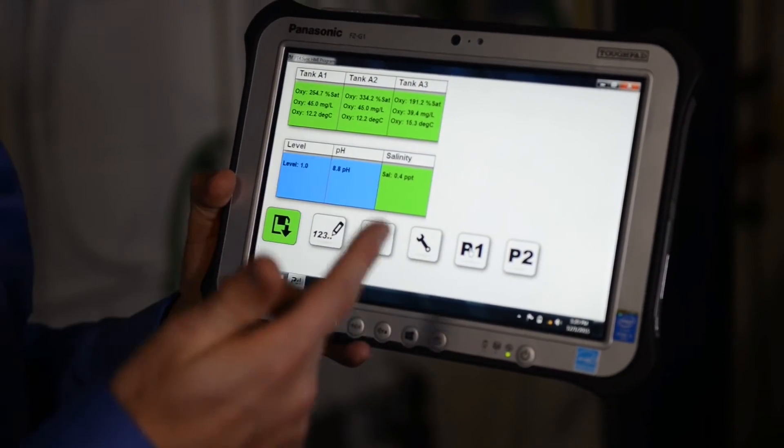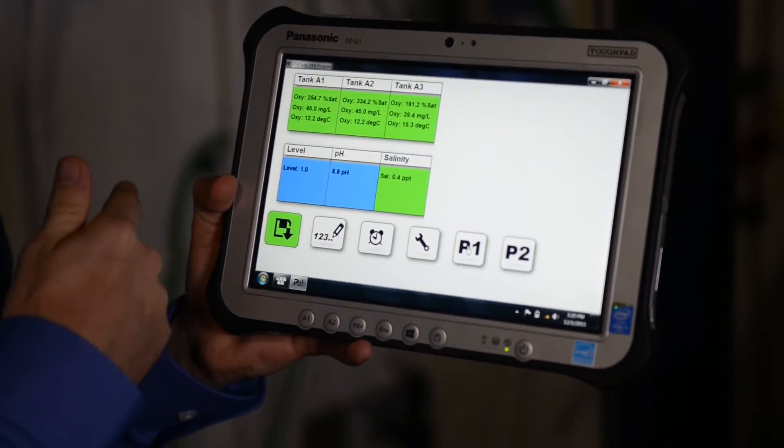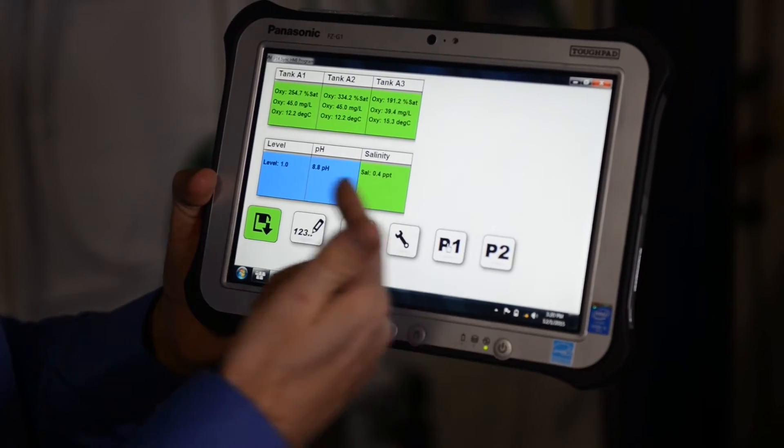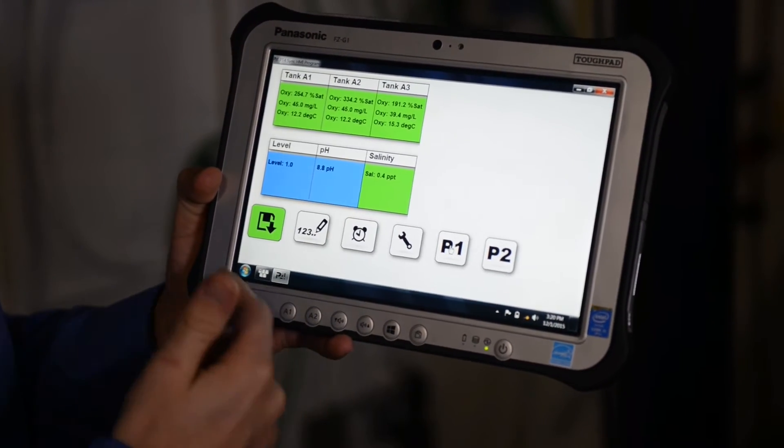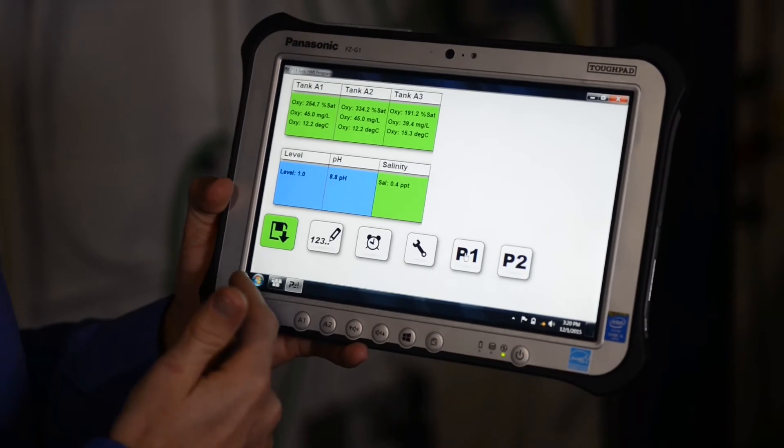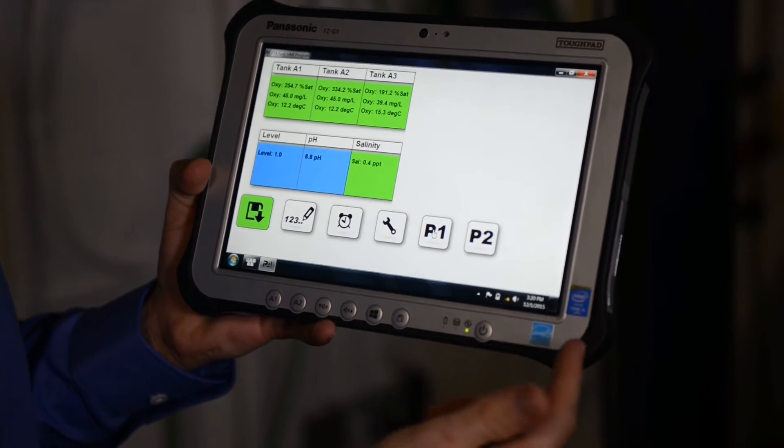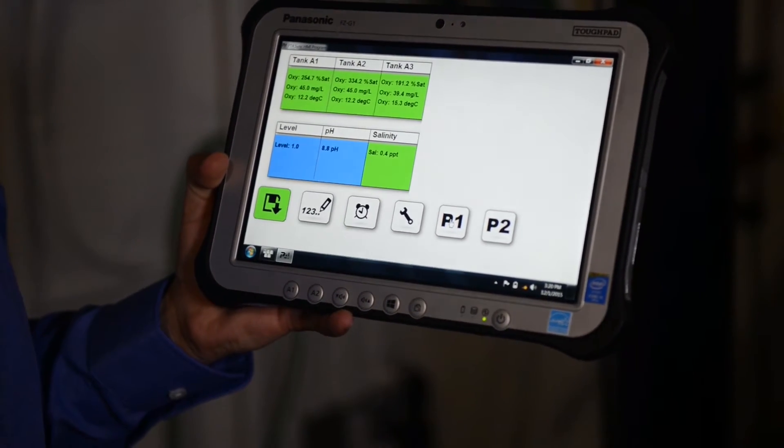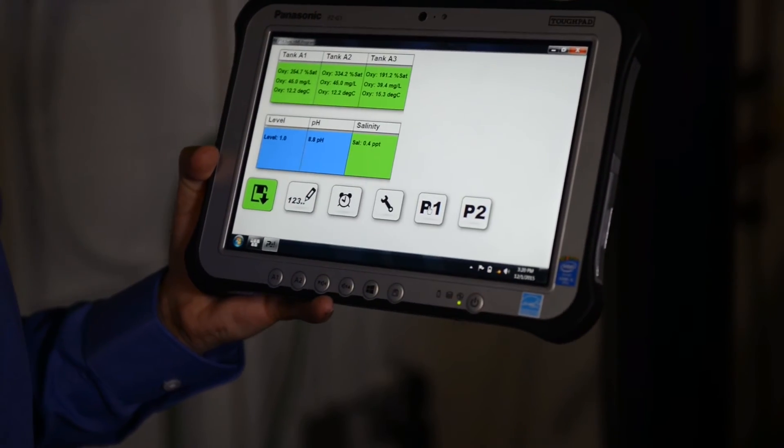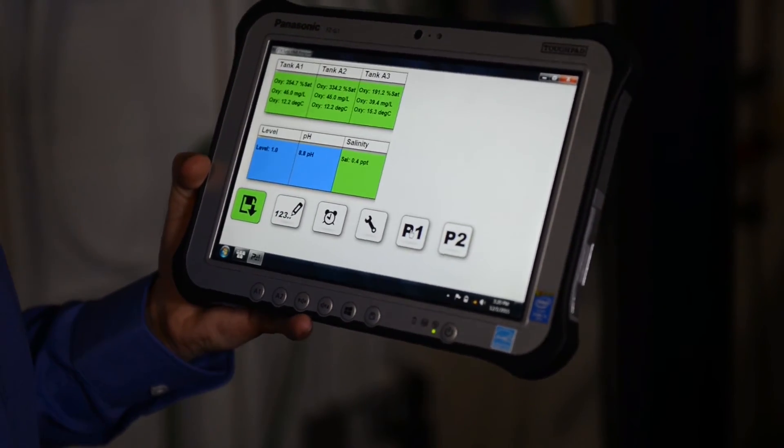So all the information from the pens in the back of the truck or in the whale boat are fed to this tablet wirelessly, and the information is data logged directly to the solid state hard drive on this tablet, which can then be emailed out or extracted with a USB.